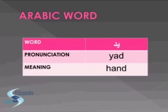Let's link YA to an Arabic word: 'yed' — yed means hand. To say 'my hand,' we add an 'e' sound at the end and it would be 'yedi' — yedi means my hand. And 'yed' means the hand or a hand.